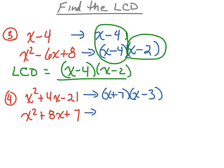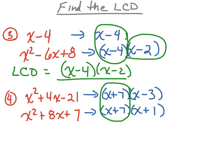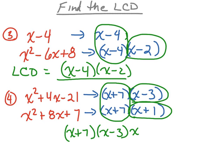Now factoring x squared plus 8x plus 7 — x times x gives the x squared. I need factors of 7 that also add up to 8. The two numbers are 7 and 1. Notice 7 times 1 gives 7, and 7 plus 1 also gives 8. So these are the factors of x squared plus 8x plus 7. We have some common factors — that x plus 7 will be part of our least common denominator. However, we also need x minus 3 and x plus 1 as part of the least common denominator. Therefore, my least common denominator consists of all three of these factors.